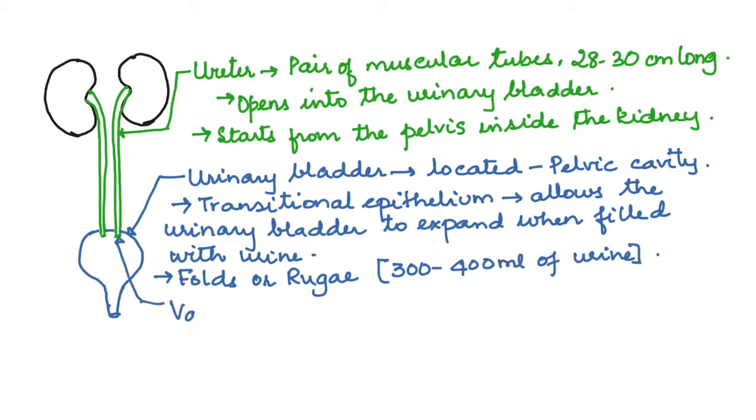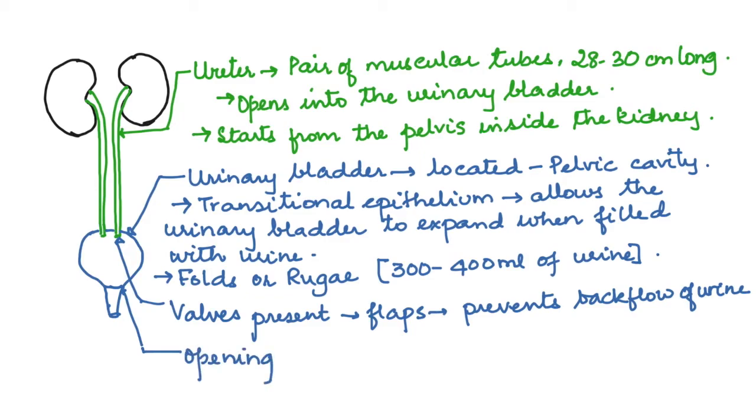There are valves present where the ureters open into the bladder to prevent the backflow of urine. The base of the urinary bladder shows the presence of the opening of the urethra.